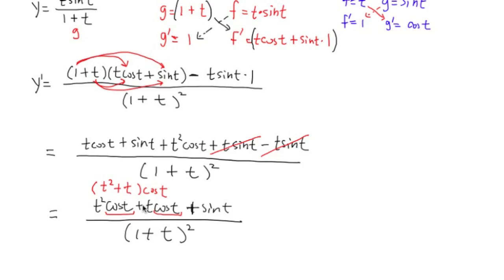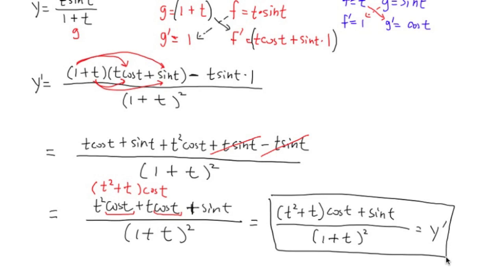Even though they could have factored another t, but they didn't do it. So don't worry too much. Anyways, to finish this up, I will get t squared plus t times cosine t, and then you add sine t. All this on the numerator, all over 1 plus t squared. Like this. And this will be your y prime. All right? That's it.